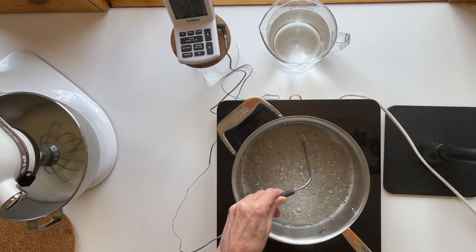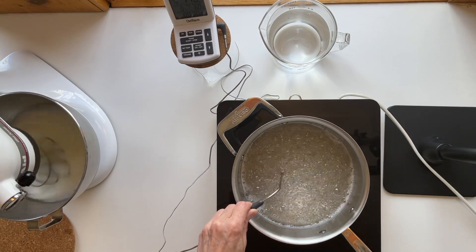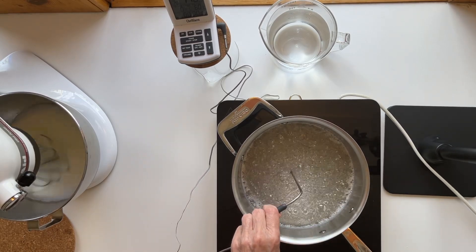The meringue should be shiny. If you go too far, you've dried it out and then it has nowhere to expand. It won't taste good and it won't look good.